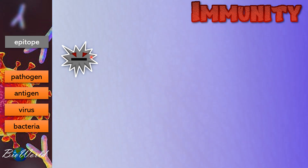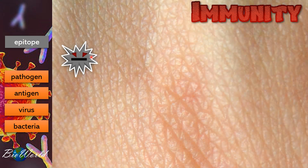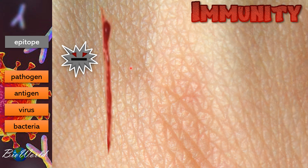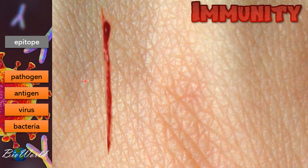The pathogen is harmless to us as long as it remains outside our body. However, when there is an entry point — for example, an injury on our skin — the pathogen can now enter and this triggers our immune response.